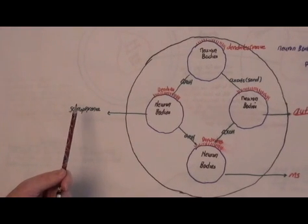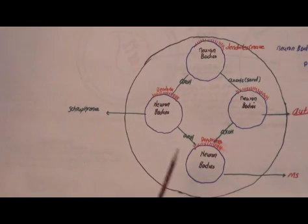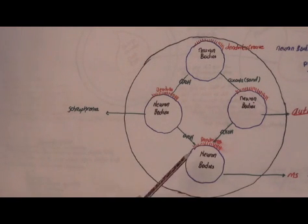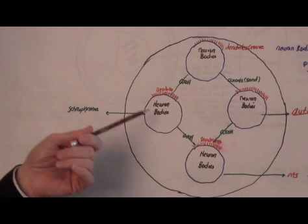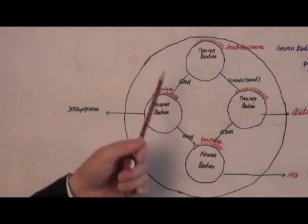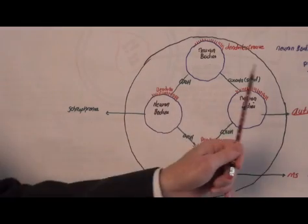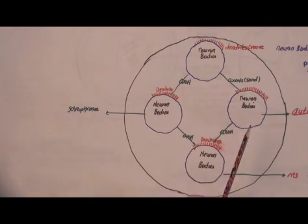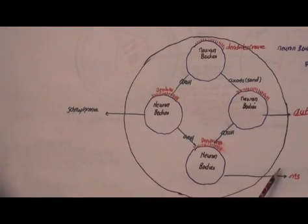So the interesting factor in all of this is that it has been shown by research that they know for sure that if stem cells are injected into these different neuron bodies they can absolutely show a decrease of all of these symptoms of schizophrenia, of Parkinson's disease, of autism and of MS.